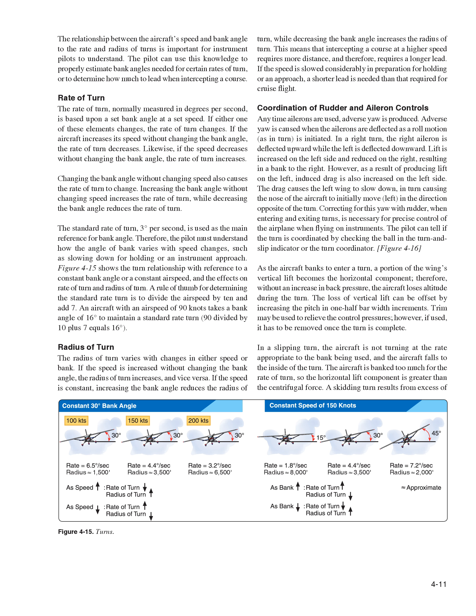Radius of Turn. The radius of turn varies with changes in either speed or bank. If the speed is increased without changing the bank angle, the radius of turn increases, and vice versa. If the speed is constant, increasing the bank angle reduces the radius of turn, while decreasing the bank angle increases the radius of turn. This means that intercepting a course at a higher speed requires more distance and therefore requires a longer lead. If the speed is slowed considerably in preparation for holding or an approach, a shorter lead is needed than that required for cruise flight.